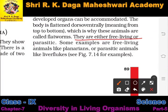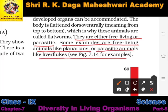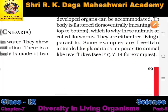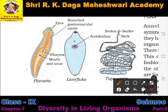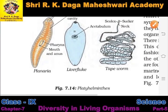These animals are either free-living or parasitic. Some examples of free-living animals include planarians, while parasitic animals include liver flukes. Here in this picture you can see all these kinds of animals.